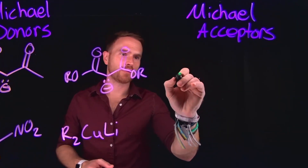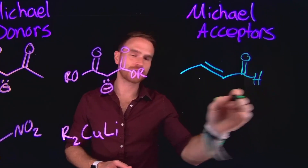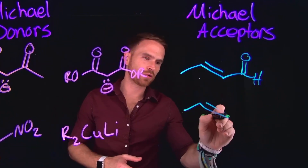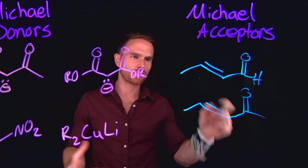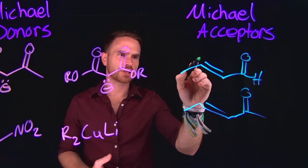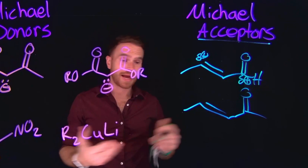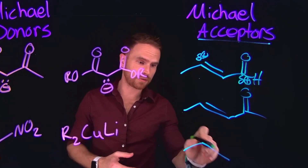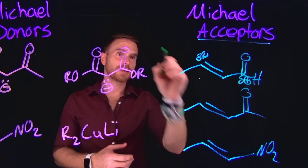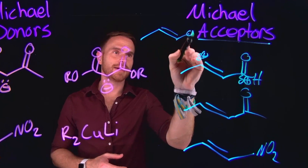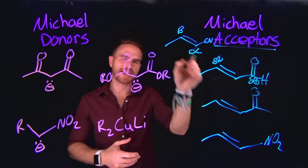Here are a few more examples of great Michael donors. Anytime we have an alpha carbon adjacent to a very electron withdrawing group, that allows for an alpha carbon deprotonation where we can form a brand new species which can act as a nucleophile. Now Michael acceptors are going to be those alpha beta unsaturated carbonyl compounds like we've seen previously, and these can be aldehydes or potentially even ketones. If we have an alpha beta unsaturated carbonyl compound, remember we have those two different positions which can act as electrophiles, which make them great Michael acceptors. Even something like a nitrile can act as a good Michael acceptor as long as it contains this alpha beta unsaturated component.